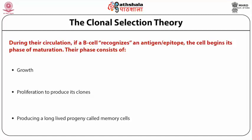Most discussion on clonal selection theory takes place around B cells and humoral response for purely historical reasons. Our knowledge about the nature of B cell receptors preceded the identification of T cell receptors by several years. There was a period when scientists thought there is only one kind of lymphocyte — B lymphocytes. Identification of T cells, their types, and their roles came up much later. Acceptance of clonal selection theory facilitated placing new information neatly alongside known bits. Participation of T cells in the case of specific antigen is also according to clonal selection theory; they also proliferate and create memory cells.